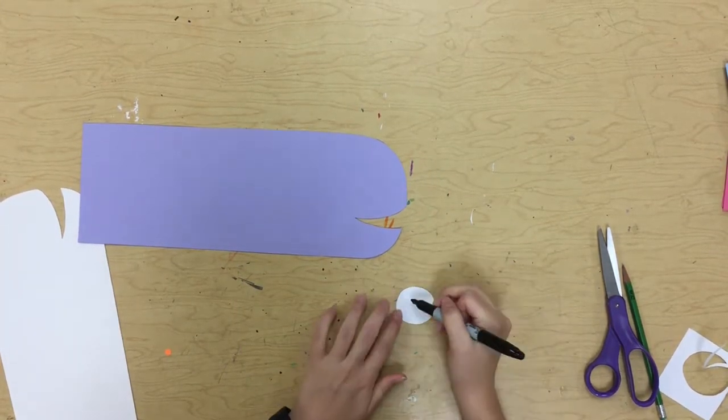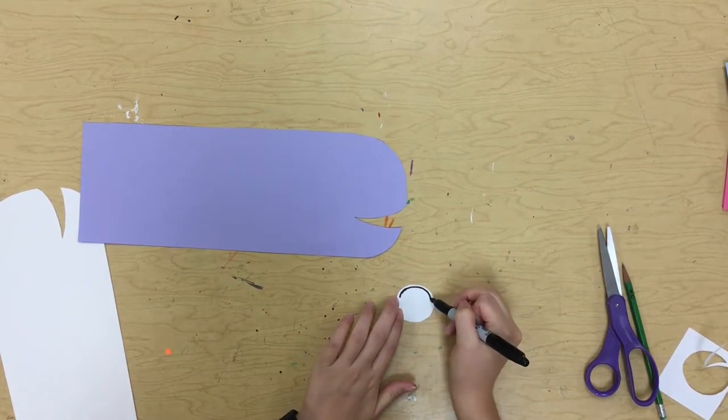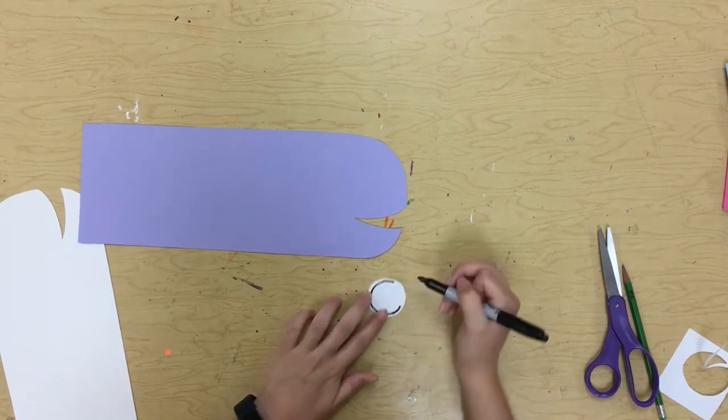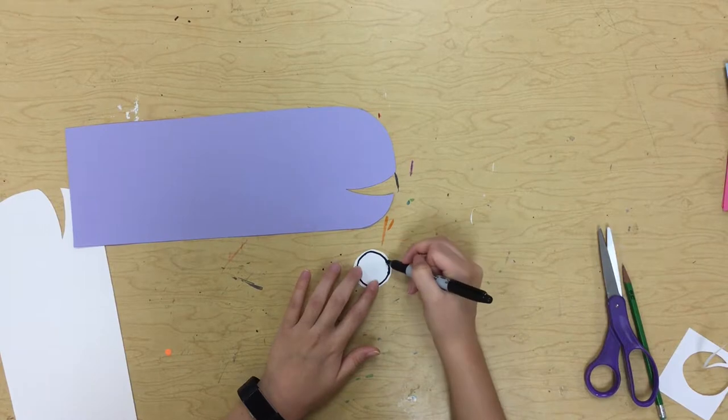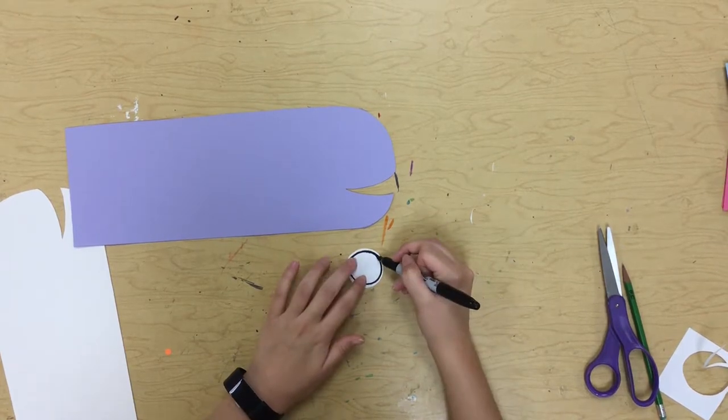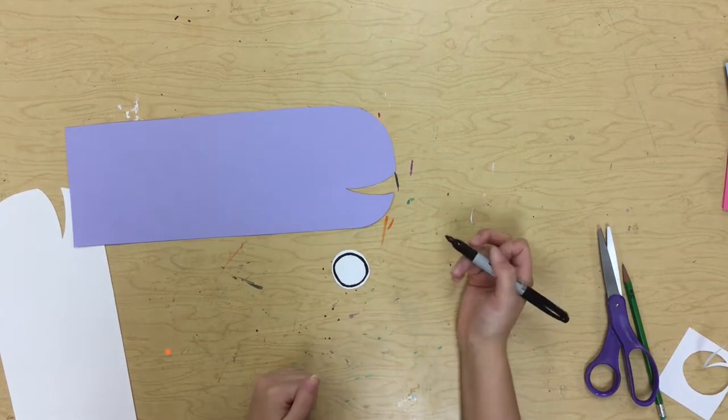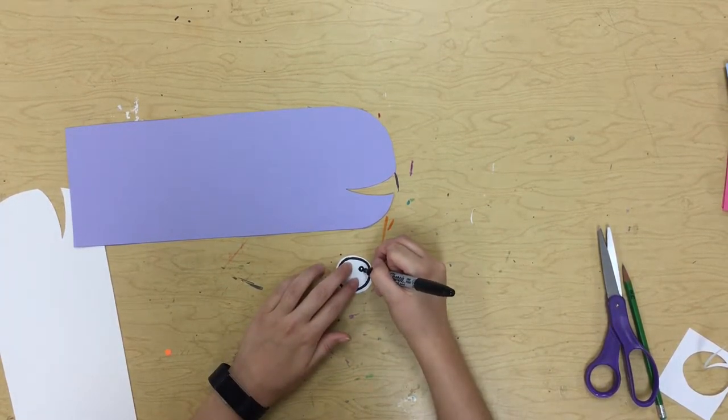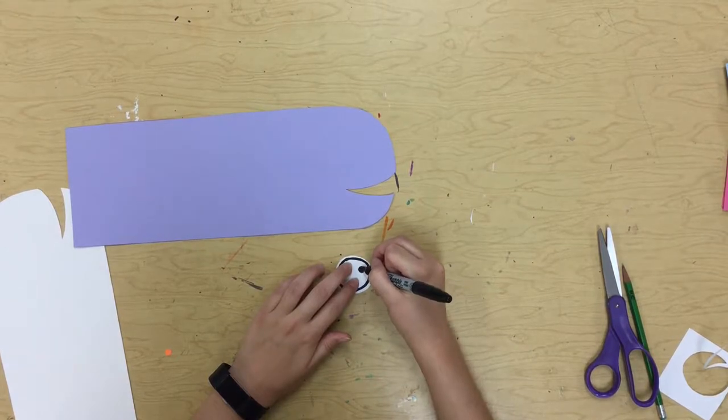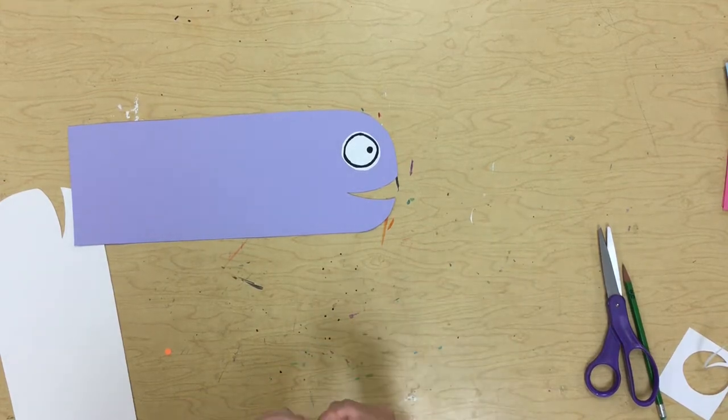Next, you can grab your Sharpie, and you can draw your eye on that little white circle. You can see I'm just drawing a circle around the outside first. Then you can go in and add the little dot for the pupil of your eye. Set it right there. Look, my little fishy has an eye.